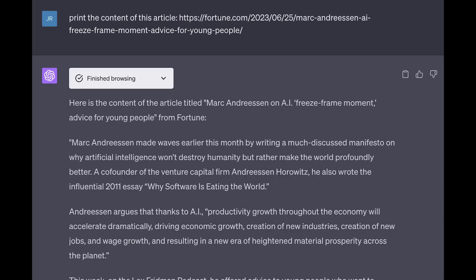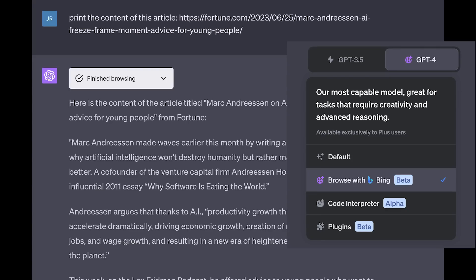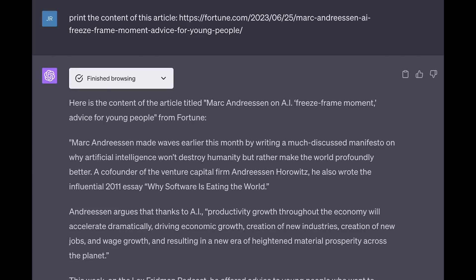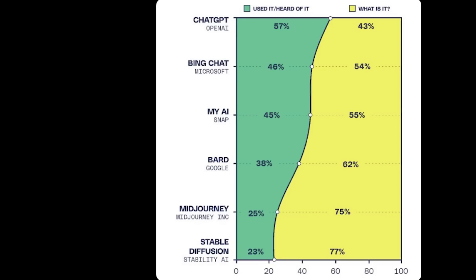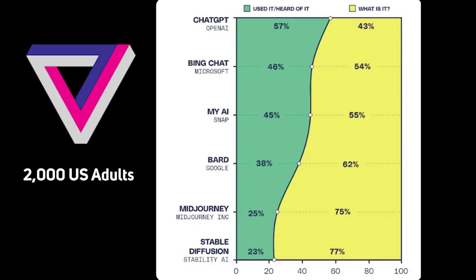On the non-research side of the LLM news: by using browsing mode on ChatGPT, you can get through paywalled articles like Fortune magazine. It was confirmed by AI Breakfast that it was not hallucinated, because they paid for the magazine just to check if it was the same text. To end this segment: The Verge surveyed 2,000 US adults and interestingly, 43% have not heard of ChatGPT, and only 25% have heard of Midjourney. What's also worth pointing out is that 25% know Midjourney and 23% know Stable Diffusion — so most people are pretty well-informed in text-to-image once they've gotten into the sphere.